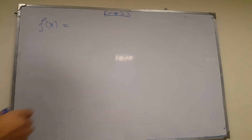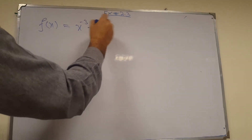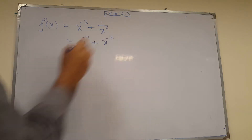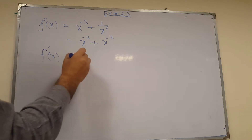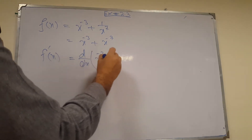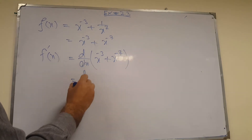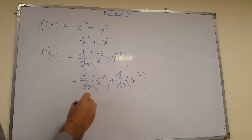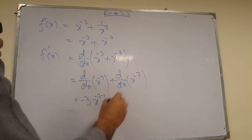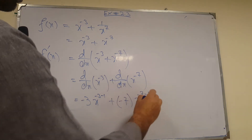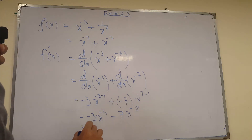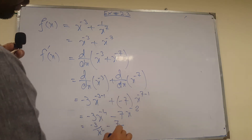Similarly, if f(x) = x^(-3) + 1/x^7, you can write both terms as x^(-3) + x^(-7). If you differentiate, you split them up and apply the power rule to each: the power comes in front and you subtract one from the power. That gives -3x^(-4) + (-7x^(-8)), which can be written as -3/x^4 - 7/x^8.